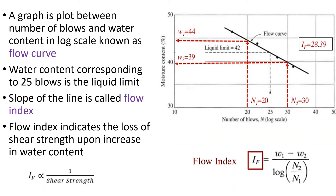In the lab, we prepare different samples with varying water content and count the number of blows for each. We then plot water content versus number of blows on a log scale. The resulting curve is called the flow curve. From the flow curve, we read off the water content corresponding to exactly 25 blows to get the liquid limit.